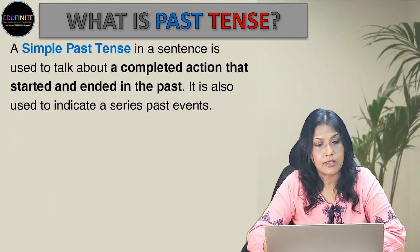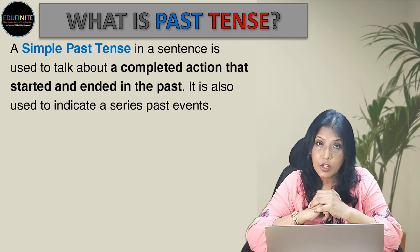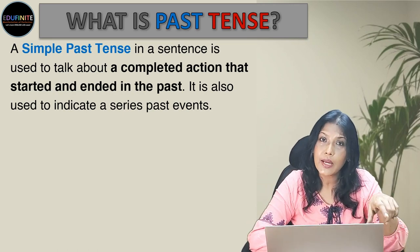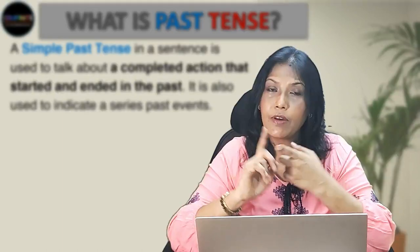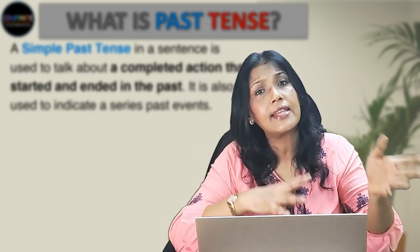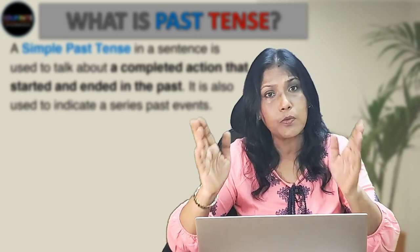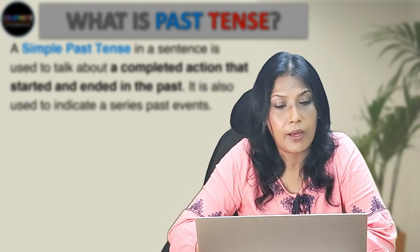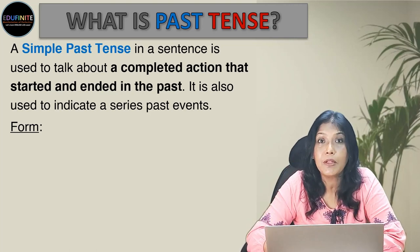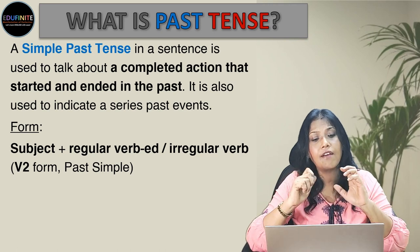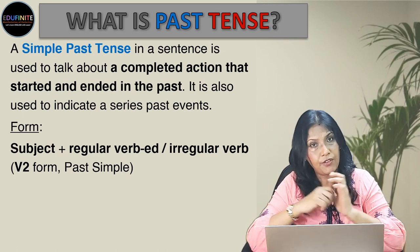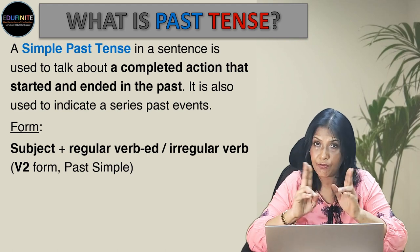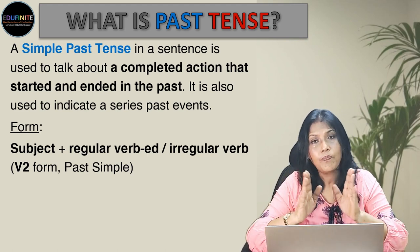Simple past tense in a sentence is used to talk about a completed action that started as well as ended in the past. It is also used to indicate a series of past events. When the action started and ended in the past, or when a series of actions all took place in the past — that is what simple past tense is all about. For the formation: subject + verb. If it is a regular verb, it will be in the ED form. If it is an irregular verb, we use the V2 form — the second form or past simple form of the verb.